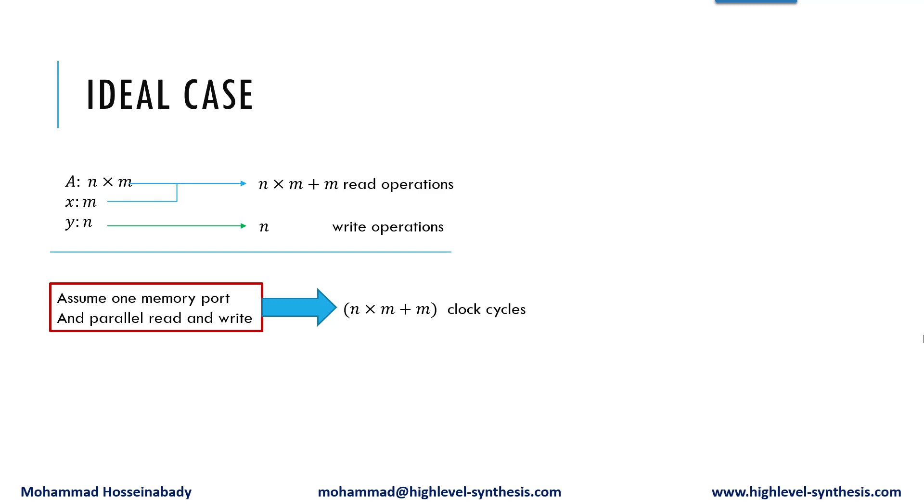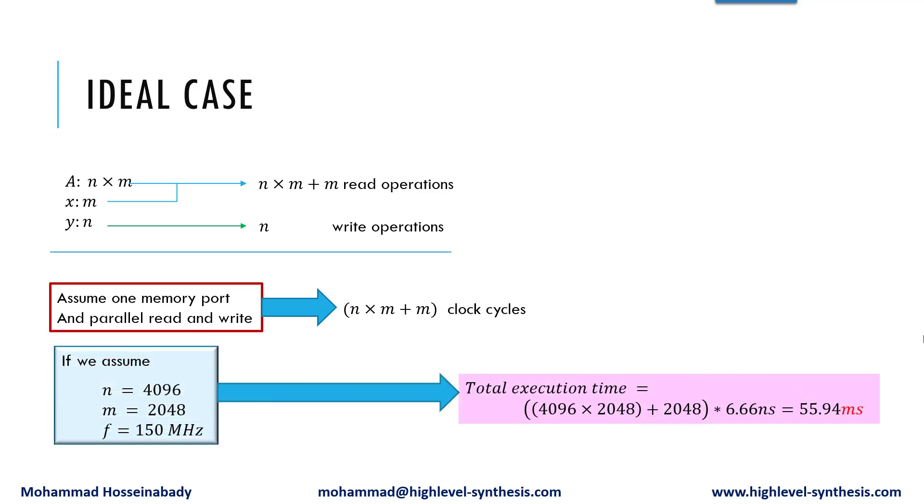If we assume N is 4096 and M is 2048 and the design frequency is 150 MHz, then the kernel takes 55.94 milliseconds to finish its task in the ideal case. However, our original software-oriented code is far slower than this ideal case.